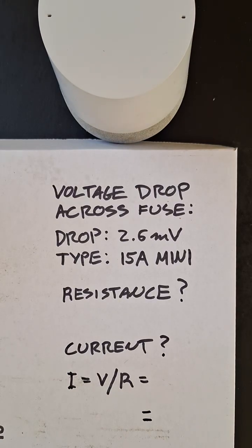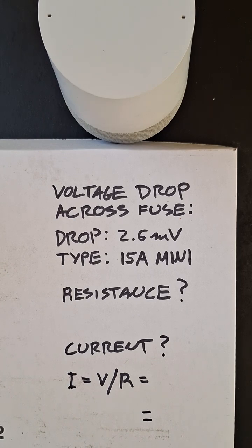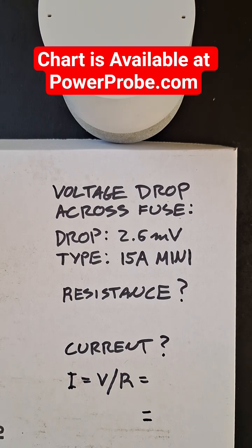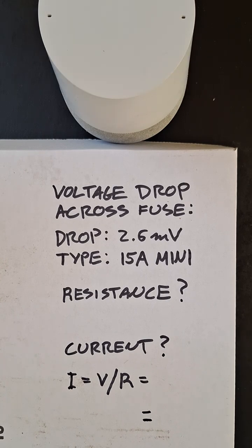I wanted to show you a quick way to estimate the current going through a fuse based on the millivolt drop across that fuse, without having to refer to a chart. We're going to calculate it ourselves. We measured a voltage drop on a fuse at 2.6 millivolts — it was the parasitic draw being created by the dome light.